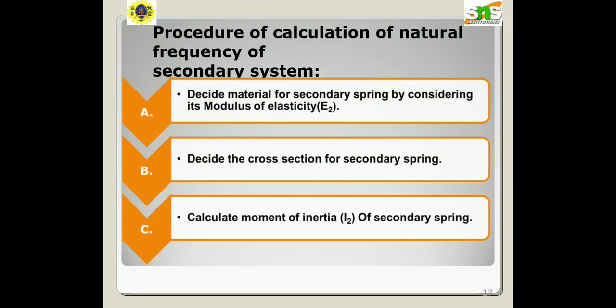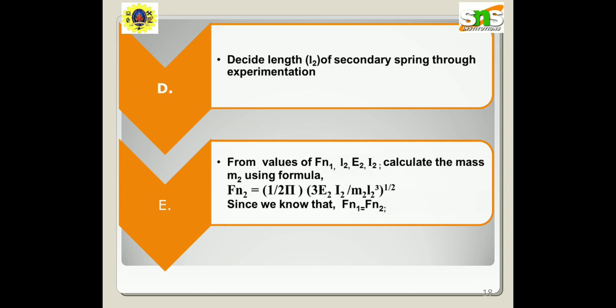The procedure for calculating the natural frequency of the secondary system is as follows: first, decide the material for the secondary spring by considering its modulus of elasticity; second, decide the cross-section of the secondary spring; third, calculate the moment of inertia of the secondary spring; fourth, determine the desired length of the secondary spring through experimentation; and fifth, using the values of frequency, Young's modulus, and moment of inertia, calculate the mass using M2.